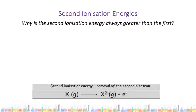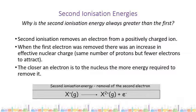A question that can be asked is: why is the second ionization energy always greater than the first? During the second ionization energy, the electron is being removed from a positively charged ion. When the first electron was removed, there was an increase in effective nuclear charge — we have the same number of protons but fewer electrons to attract, meaning each remaining electron will feel a slightly increased attraction to the nucleus. Because the ion is smaller than the original atom, more energy is required to remove an electron from the ion.